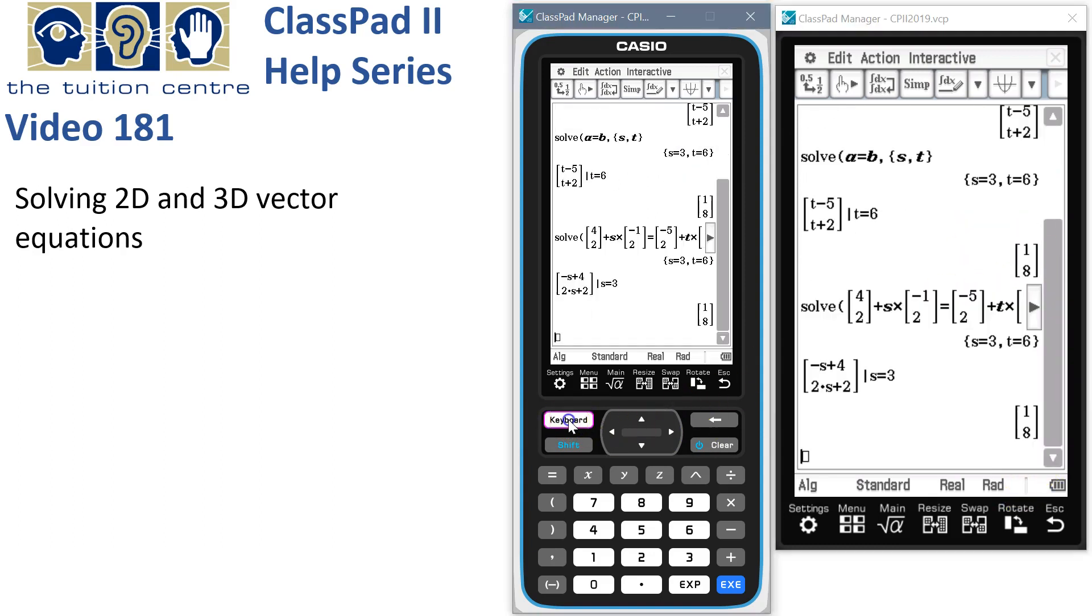You can see if you're the doubting type that obviously both particles are at 1, 8 at some time on their journey. This one is there after 6 seconds, so this one got there first after 3 seconds. And we're done.